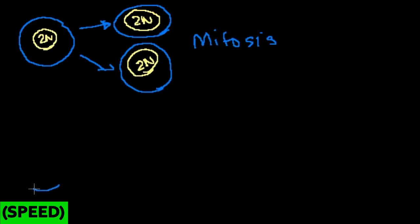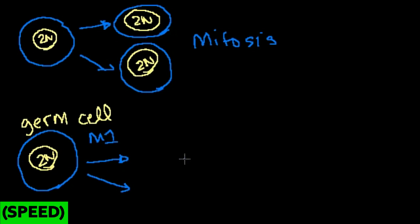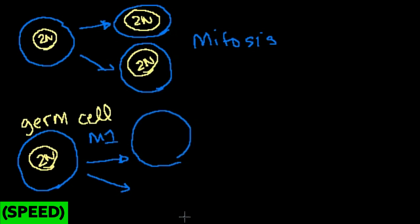If I start off with a diploid germ cell, it could undergo mitosis to produce more germ cells, but we'll talk about how it produces gametes. It actually goes through two rounds, called meiosis I and meiosis II. In the first round, this diploid cell essentially splits into two haploid cells. If you started with 46 chromosomes, you formally have 23 chromosomes in each — those 23 pairs get split.